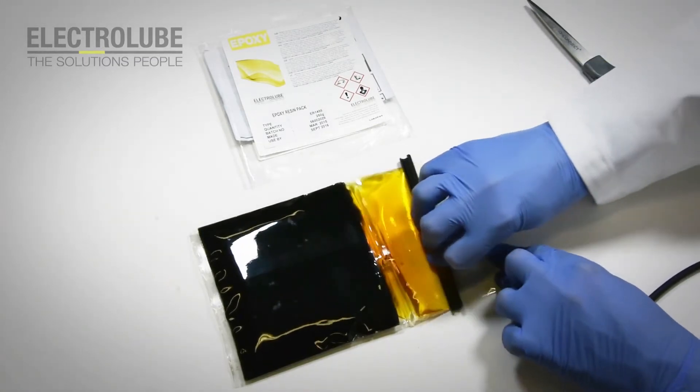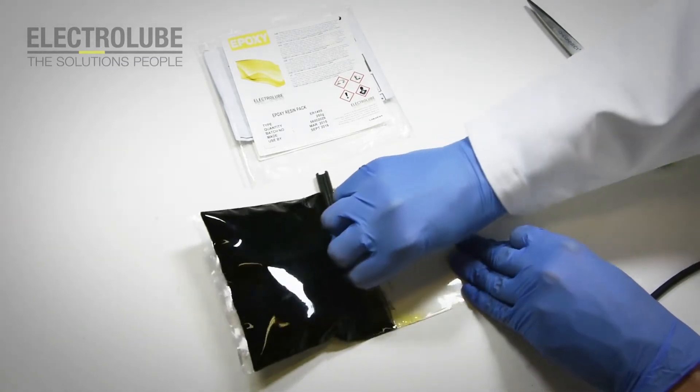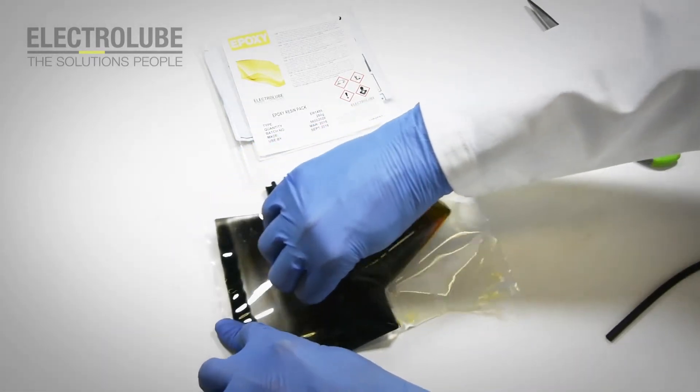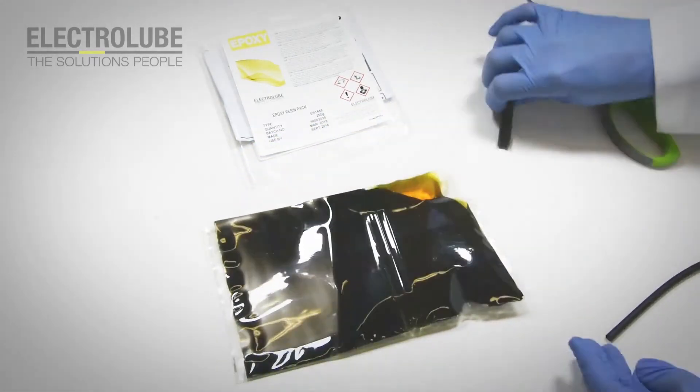Using the removed clip, push all of the part B into the part A section and begin mixing by moving the resin around in the bag with your hands.